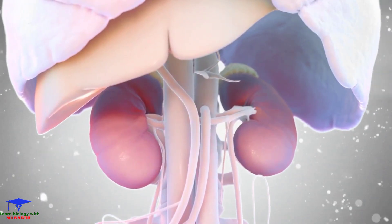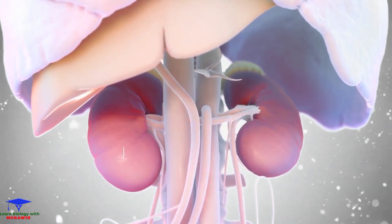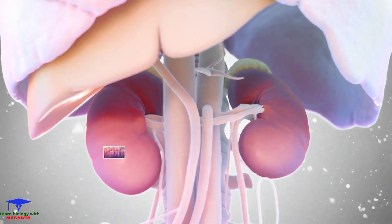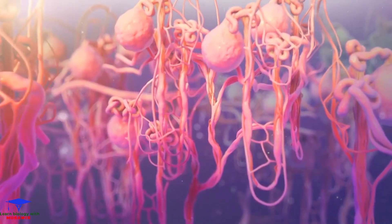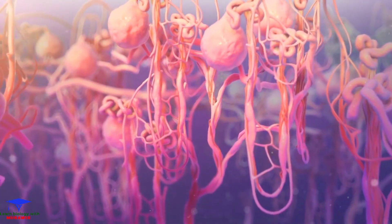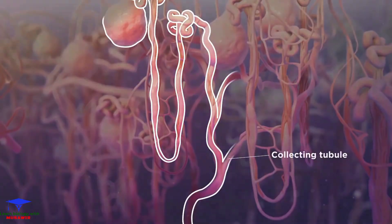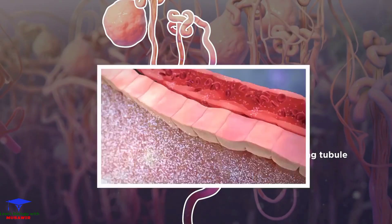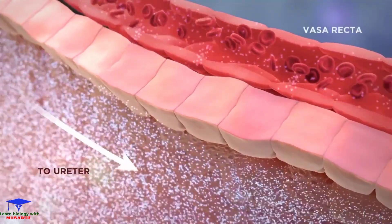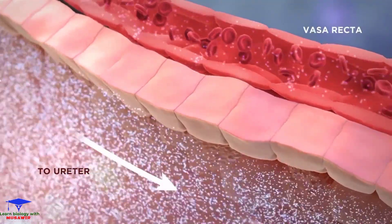AVP's site of action within the kidney is primarily the V2 receptor on cells of the collecting tubule, one of the most distal structures of the nephron, immediately preceding the ureter.